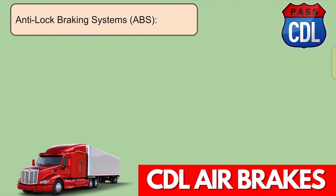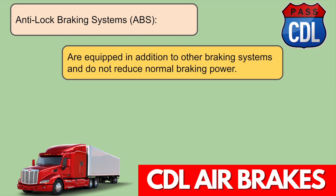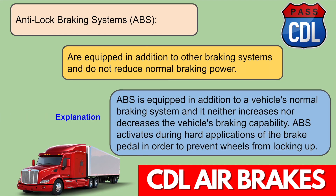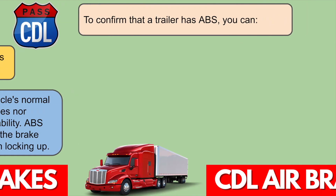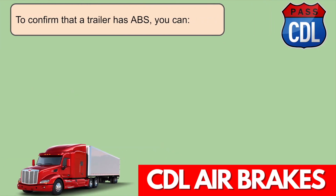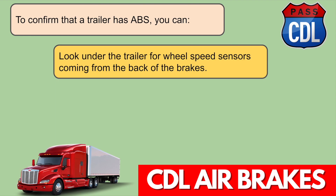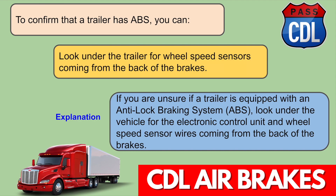Anti-lock braking systems are equipped in addition to other braking systems and do not reduce normal braking power. ABS neither increases nor decreases the vehicle's braking capability. ABS activates during hard applications of the brake pedal to prevent wheels from locking up. To confirm that a trailer has ABS, look under the trailer for wheel speed sensors coming from the back of the brakes.